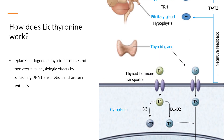Liothyronine replaces endogenous thyroid hormone and exerts its physiologic effects by controlling DNA transcription and protein synthesis. This effect on DNA is obtained by binding of liothyronine to thyroid receptors attached to DNA. Exogenous liothyronine exerts all the normal effects of the endogenous T3 hormone — increasing energy expenditure, accelerating cellular oxidation, stimulating growth, maturation, and metabolism of body tissues, aiding in myelination of nerves and development of synaptic processes in the nervous system, and enhancing carbohydrate and protein metabolism.